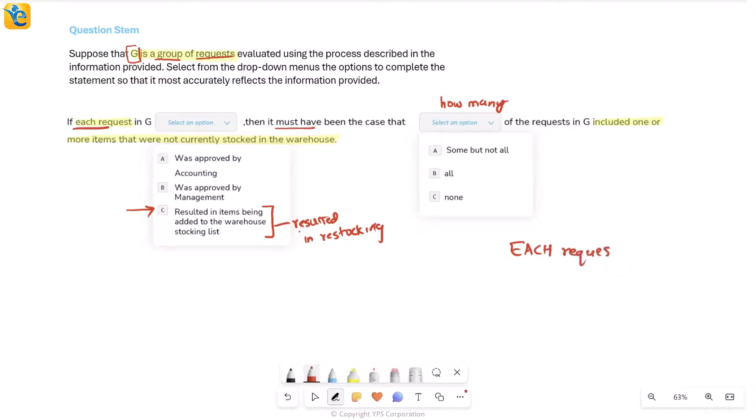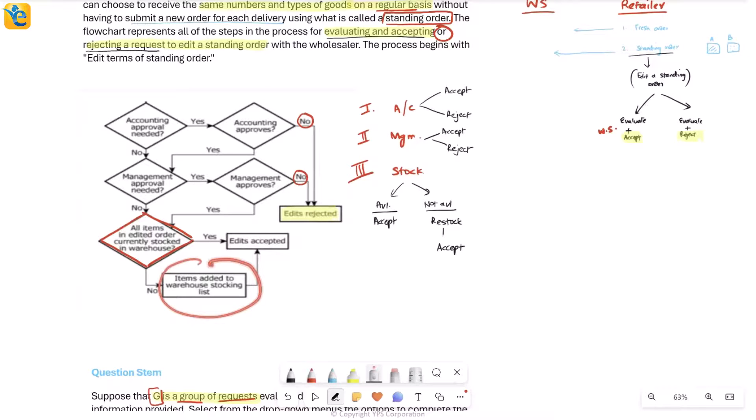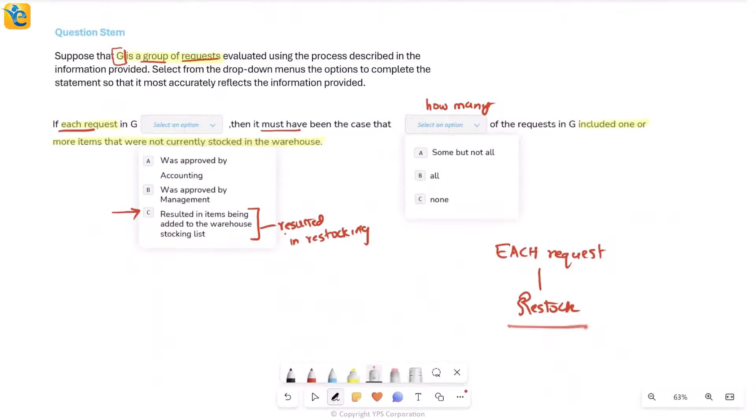If each request in G resulted in items being added—let me keep it in simple language—resulted in restocking. If each request resulted in restocking, when does an item result in restocking? We find in the flowchart that restocking will happen if it's not already in stock. See, when the answer here is no to the question 'are they already stocked,' then you add things. So if each request ended up in restocking stuff, adding more stuff, then it definitely means that each of these had something missing, something that was unstocked. All of these requests had that element, so then this connects with 'all.' Read it completely now: if each request in G resulted in restocking, then it must have been the case that all of the requests included one or more items—that means at least something was there in the request—that was not currently stocked. If you were not currently stocked, that's why you are being restocked. Perfect.